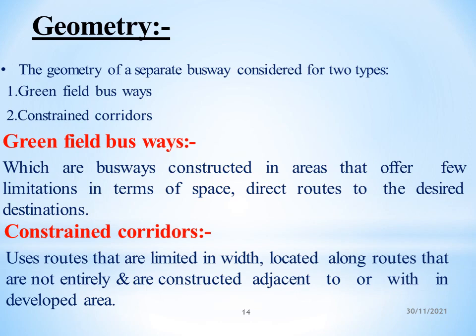The geometry of a separate busway is considered for two types: greenfield busways and constrained corridors. Greenfield busways are constructed in areas that offer few limitations in terms of space and provide direct routes to desired destinations. Constrained corridors use routes that are limited in width, located along routes that are not entirely direct, and are constructed adjacent to or within the developed area.